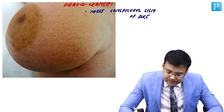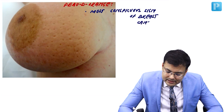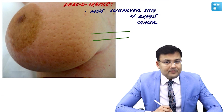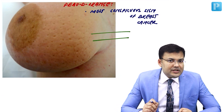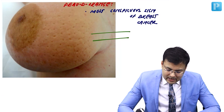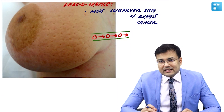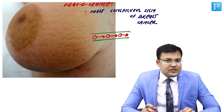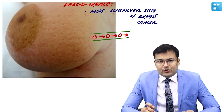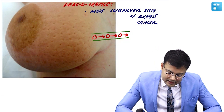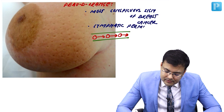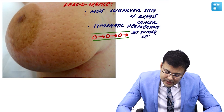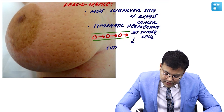What is the cause of peau d'orange? In these cases, there is lymphatic permeation by tumor cells. The tumor cells enter into the lymphatics of the skin, and because of this, there is lymphatic obstruction. Because of this lymphatic obstruction, there is cutaneous edema and the skin appears like orange skin — that is why it is known as peau d'orange. It is caused by lymphatic permeation of tumor cells, leading to cutaneous edema.